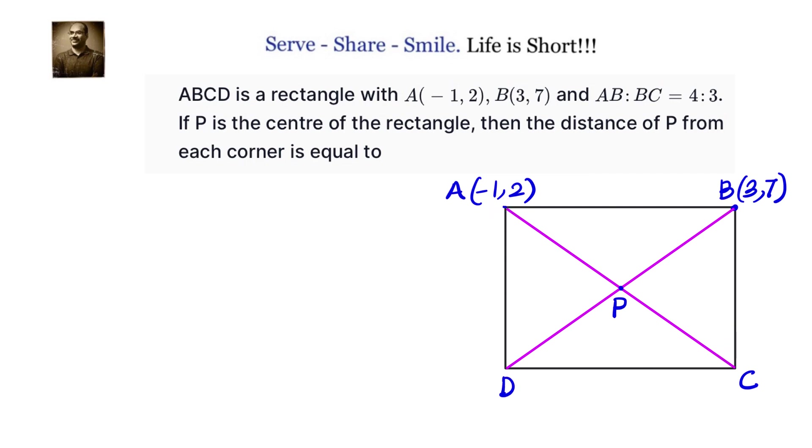Now we have been given a rectangle ABCD. We know the coordinates of A and B. We need to calculate the distance of P, the center of the rectangle, to each vertex that is A, B, C, and D.